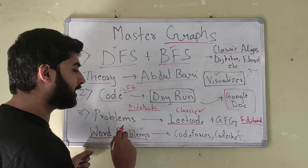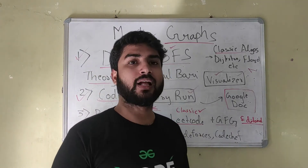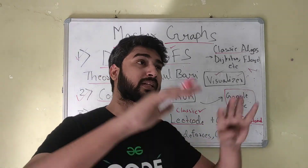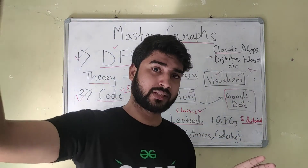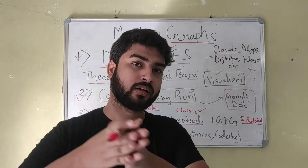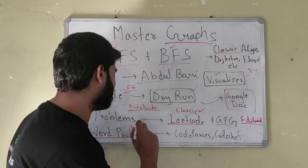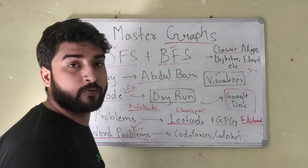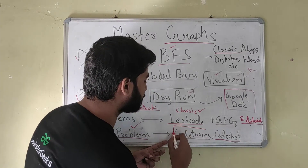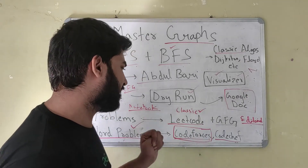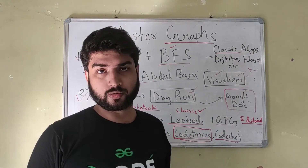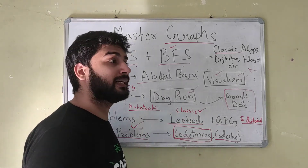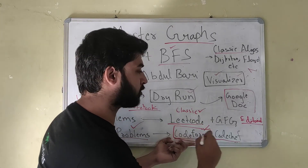The second type are word problems, or story-based problems. These have a narrative — for example, on Codeforces or CodeChef you'll have a story about a kingdom, cities, and connections — but it's essentially a graph problem wrapped in a story. It's very important to practice these because many people struggle with word problems even if they're good with classic problems. Solve at least 10 to 15 word problems on Codeforces. Most interview problems come from LeetCode or Geeks4Geeks, while coding round problems are generally similar to Codeforces or CodeChef contest problems.